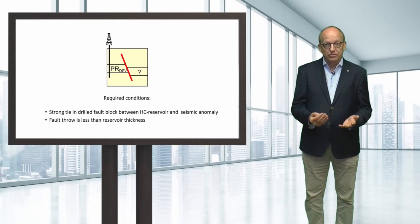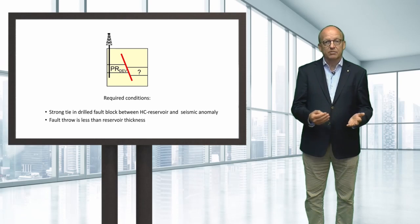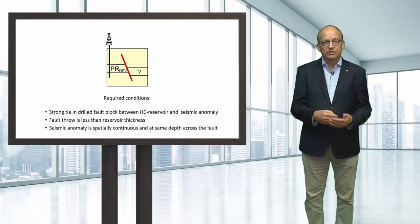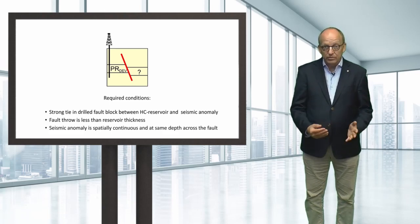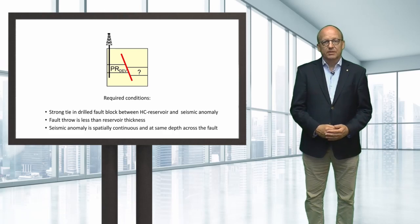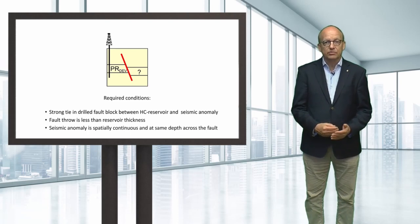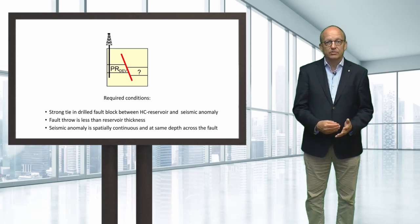The fault throw must be less than reservoir thickness over part of the hydrocarbon-bearing section across the fault, and the fault is not considered to be a major, potentially sealing fault. If all these conditions are met, the presence of hydrocarbons in the adjacent fault block related to the seismic flat spot or seismic amplitude anomaly may be judged sufficiently robust to qualify the associated hydrocarbon volumes in the undrilled compartment as reserves.